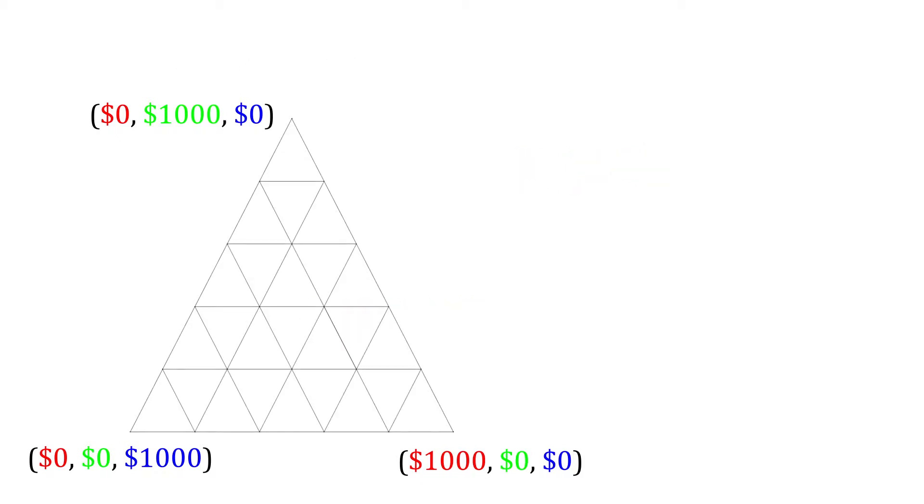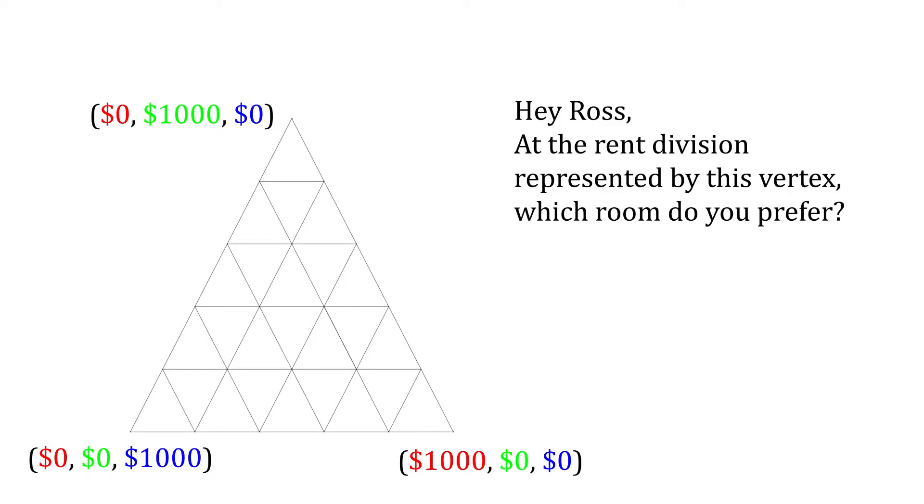Now, overlay a fine triangular grid. The finer the grid, the more accurate the results. At each point, or vertex, of the grid, we survey Ross. At the rent division represented by this vertex, which room do you prefer? Here, the red room is free, so it's his clear preference.